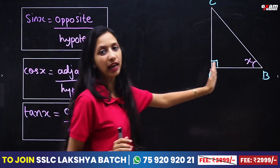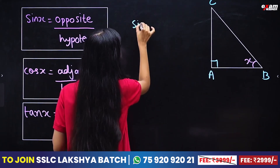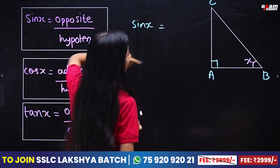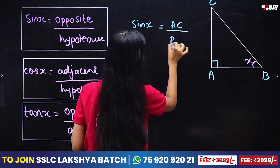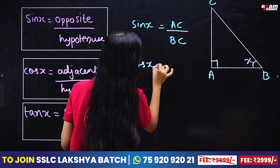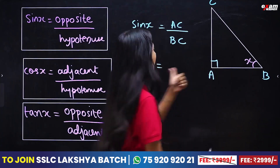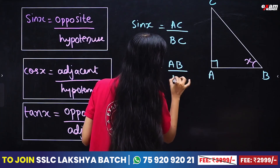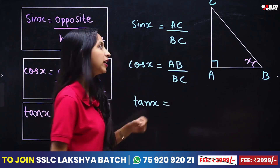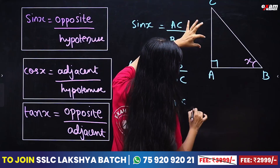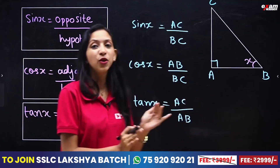Consider this triangle here: A, B, C. Here we have sin x equal to the opposite side AC by hypotenuse BC. Cos x is the adjacent side AB by hypotenuse BC. Tan x is the opposite side AC by adjacent side AB. This is how we show the ratios.